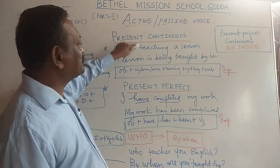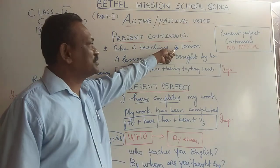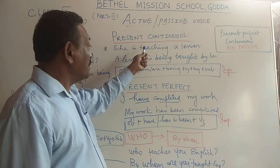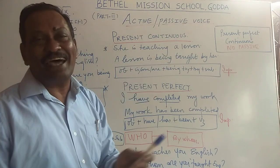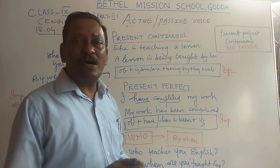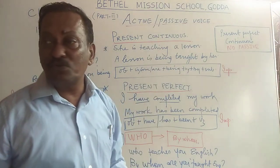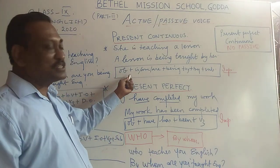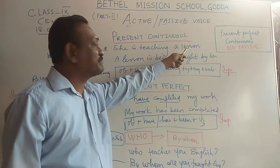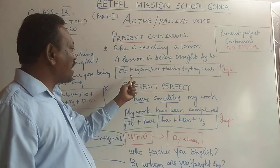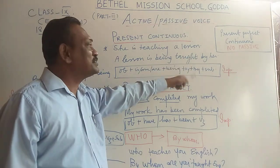Now, how is this sentence in the present continuous form changed to passive? 'A lesson' — the object — becomes the subject. Then the helping verb comes: 'is being taught by her.' A new word 'being' comes in, and 'being' is followed by the past participle. As discussed in yesterday's class, only the past participle is used in the passive voice. The formula is: Object + helping verb (is/have/are depending on singular or plural) + being + past participle + by + subject.